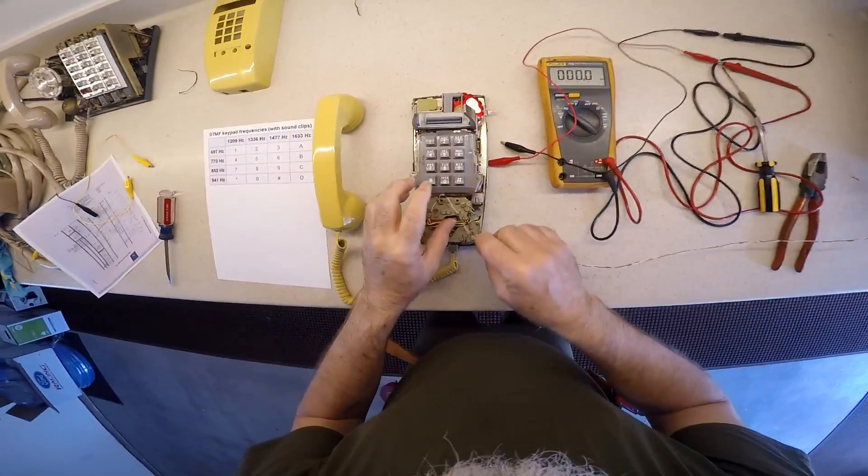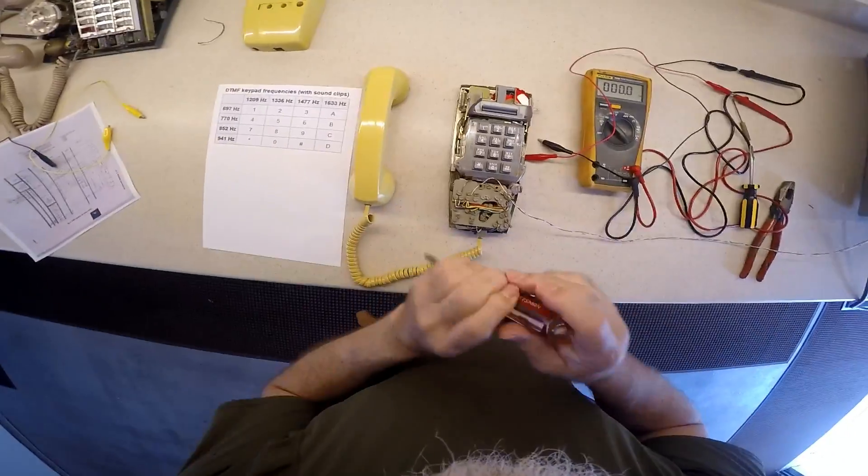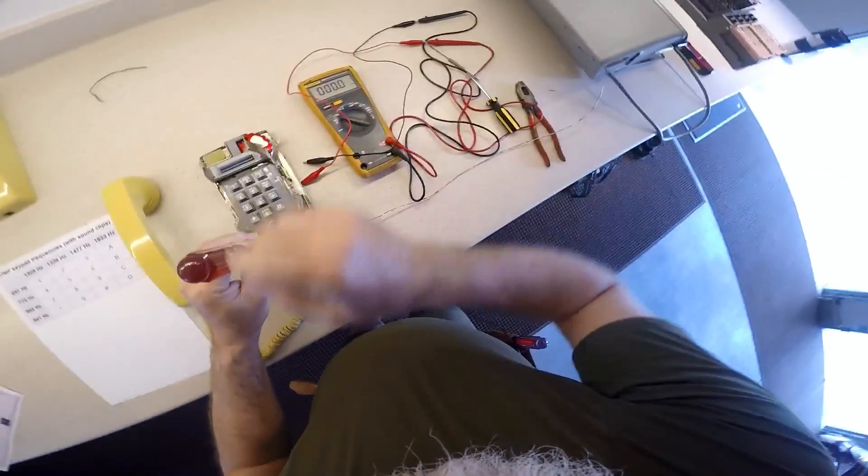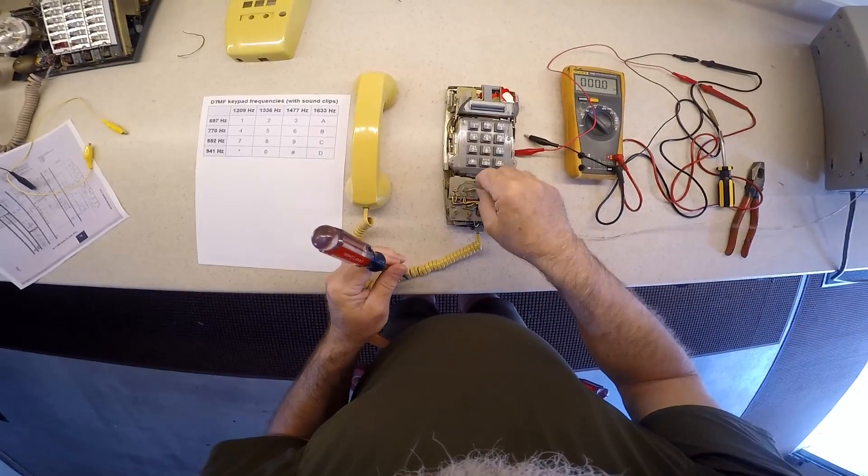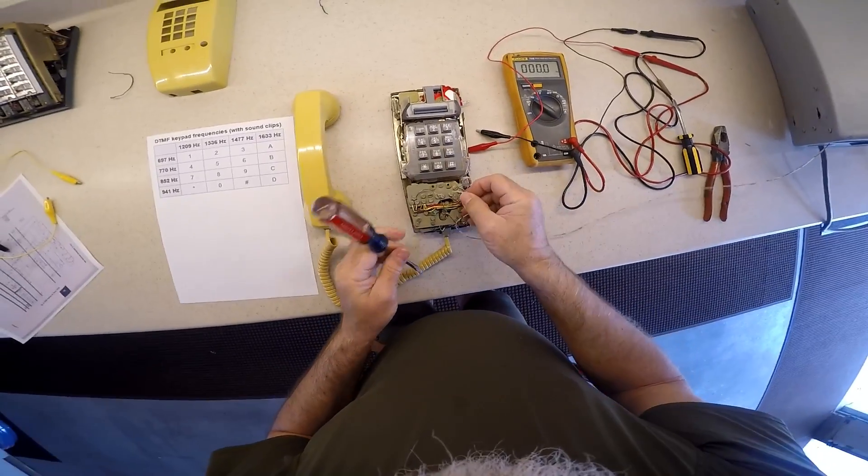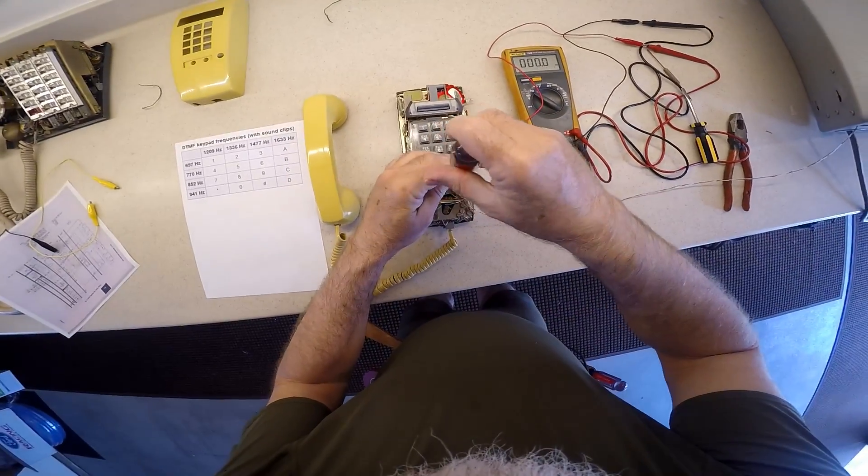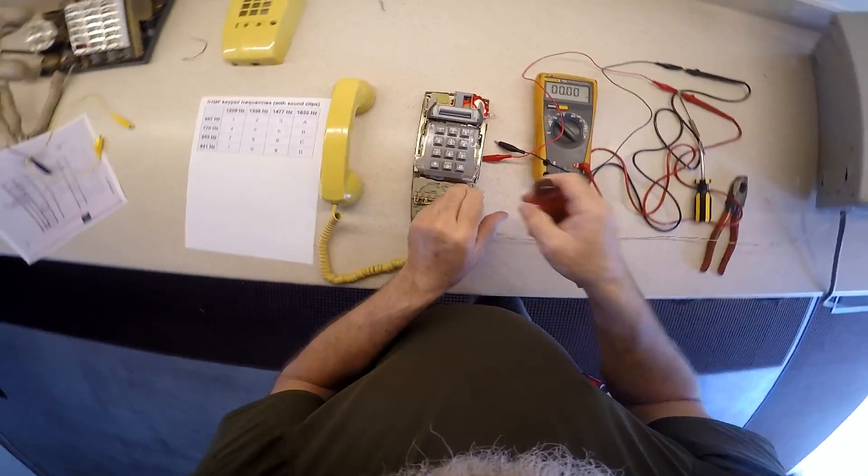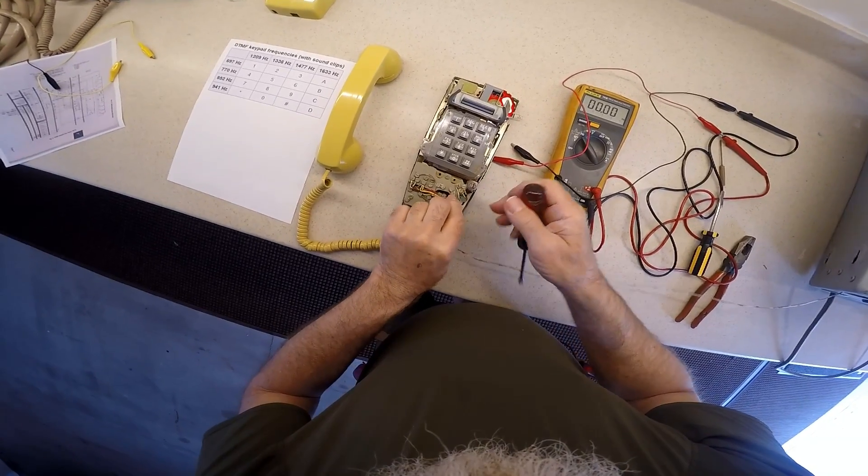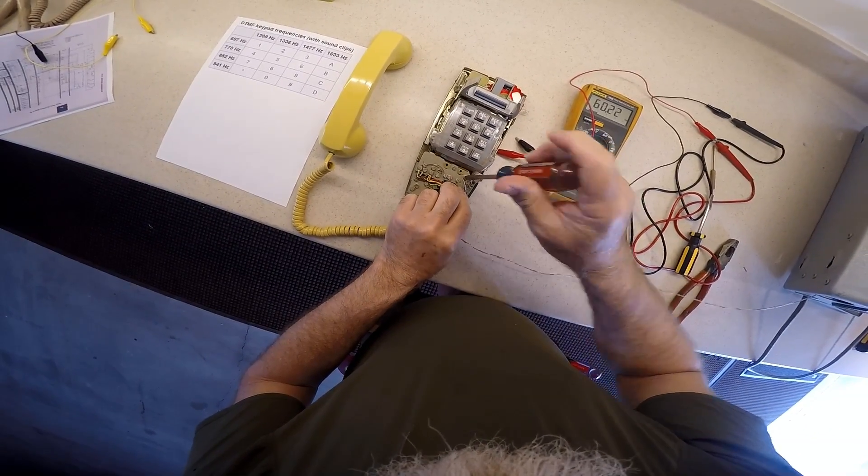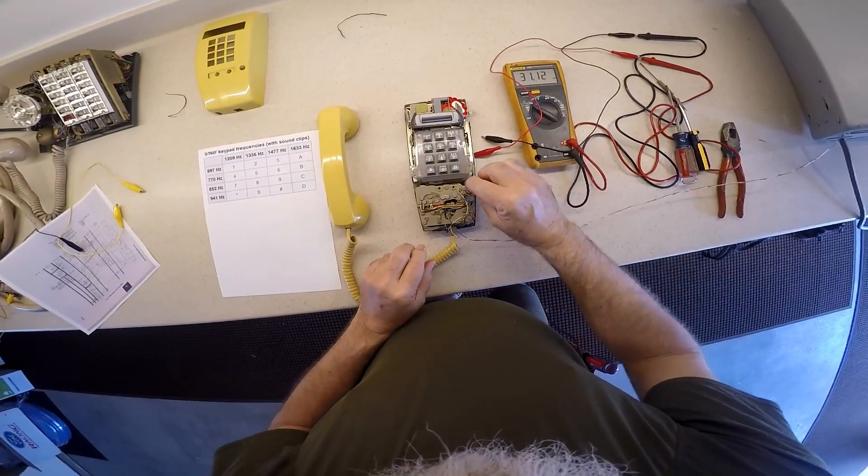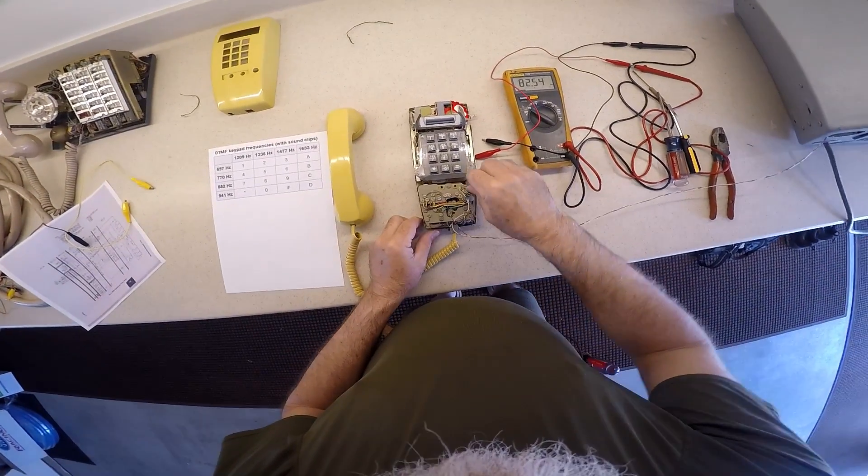Nope, so I've got something wired wrong. Oh, I see what I've done wrong here. Some different sides. So I need 1 and 2, which is over here. This type of telephone was constructed so that you could have two phone lines on the same line, and this knob you would turn from one line to the other.